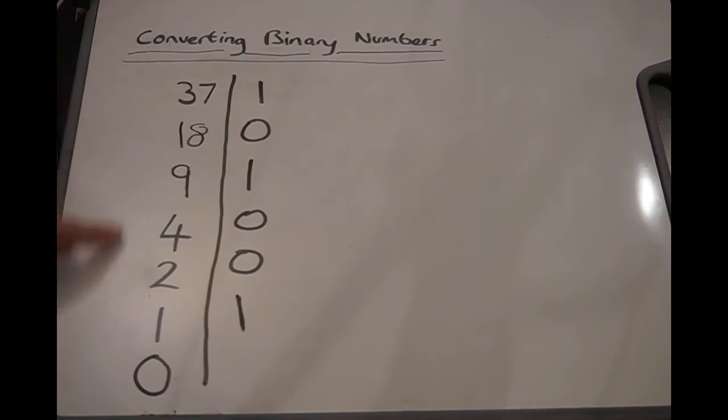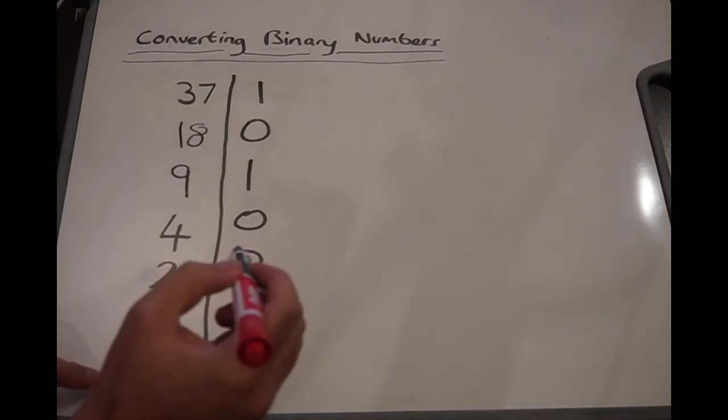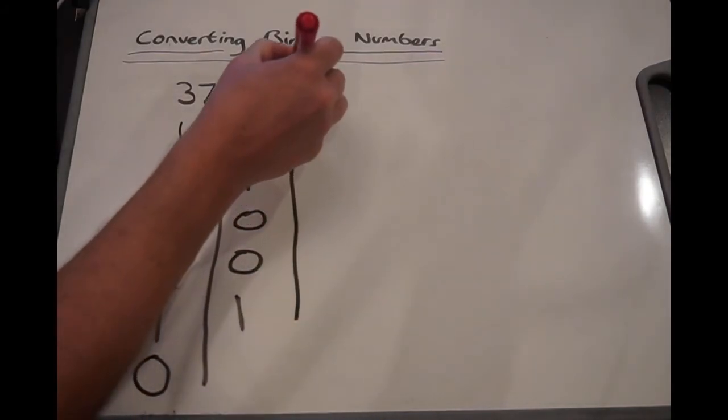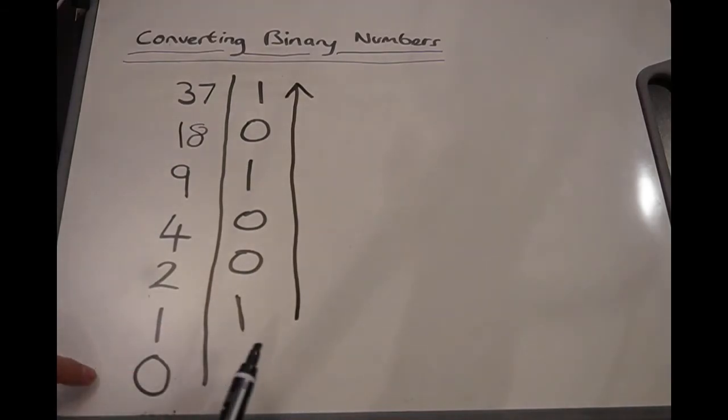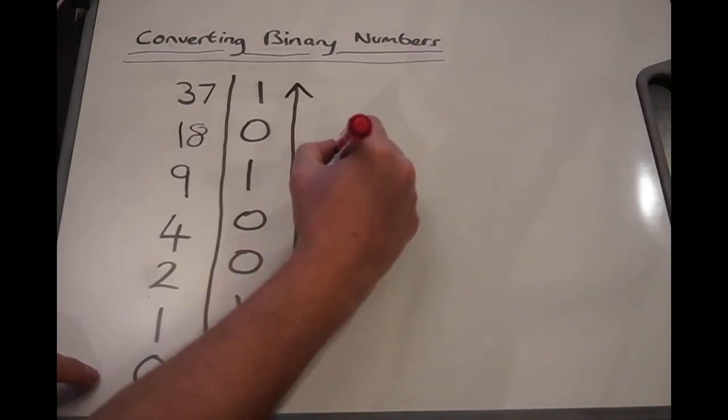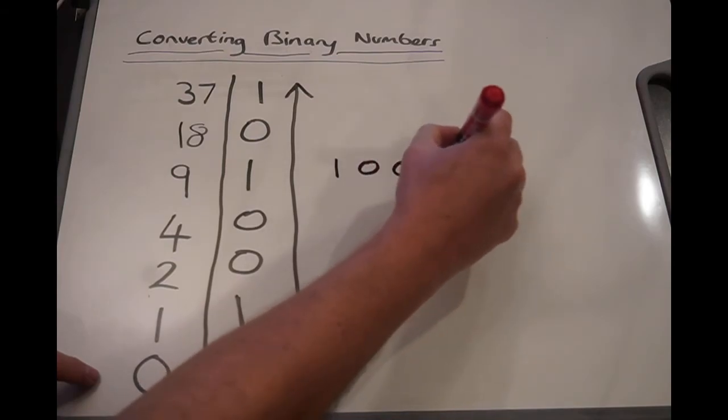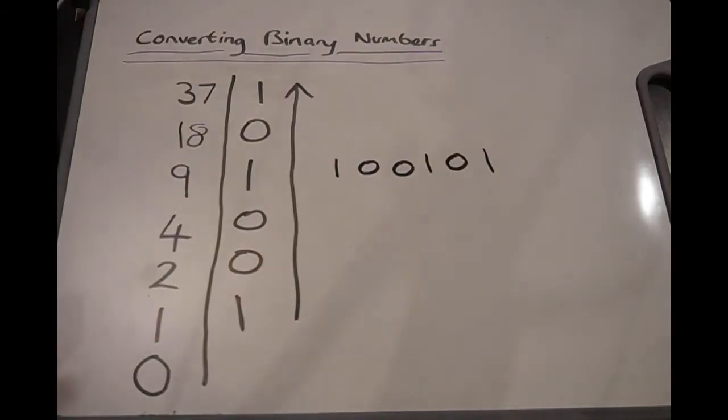Now we've got to 0 at the bottom here, we can stop. So our algorithm stops, now we've got to 0 at the bottom. And now what I want you to do is I want you to read the binary number from this way, from the bottom up. So if I write it out from the bottom up across here, I have 1, 0, 0, 1, 0, 1.